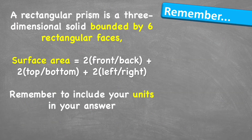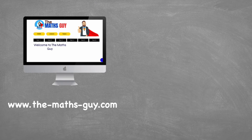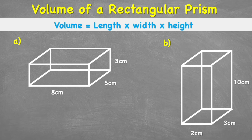To summarize: a rectangular prism is a three-dimensional solid bound by six rectangular faces. The surface area equals two front and backs, plus two top and bottoms, plus two left and rights. Always remember to include your units in your answers. Now your turn — have a go at working out the surface area of the rectangular prism shown, and put your answer in the comment section. Thanks for watching — consider subscribing and sharing. Peace out.